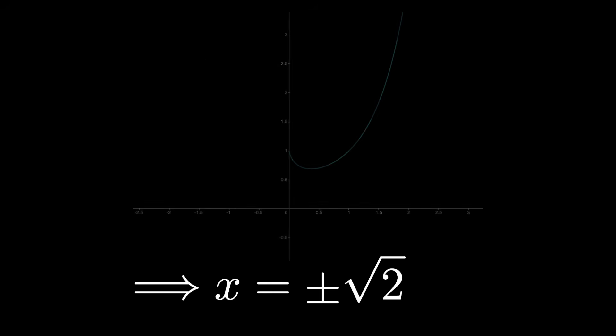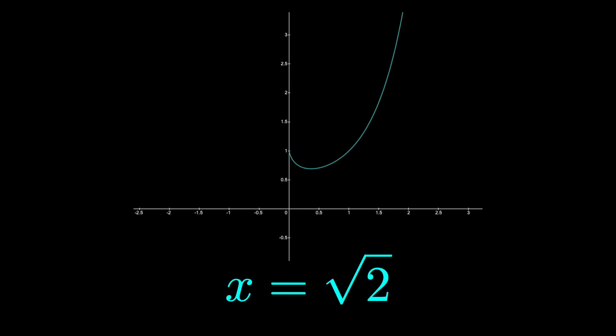For one thing, the function x to the x is typically not defined when x is negative, at least over the real numbers. So we should probably throw away the idea that x equals negative square root of 2.